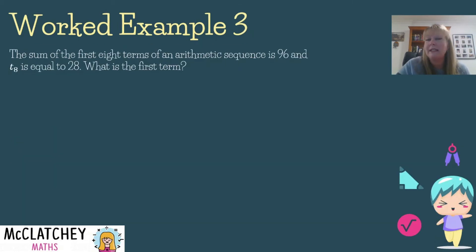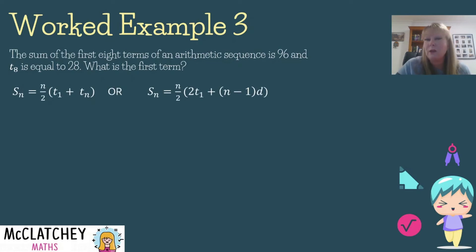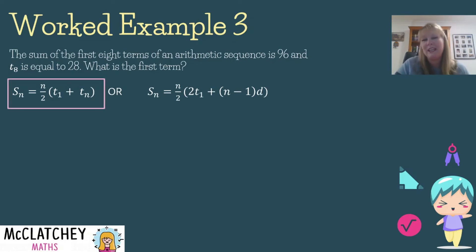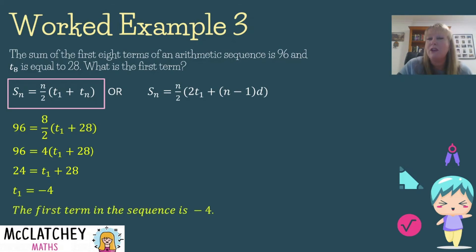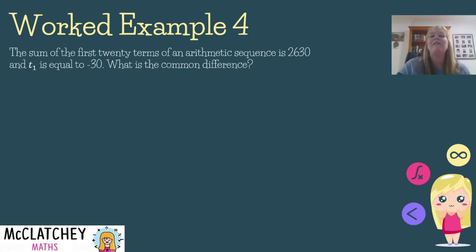Worked Example 3: The sum of the first 8 terms is 96 and the last term is 28. What is the first term? This time we have the sum and need to transpose to find the first term. Using the first formula and substituting the known values, then dividing both sides by 4 and subtracting 28, we find the first term in the sequence is equal to −4.